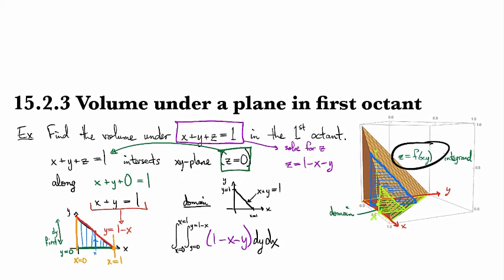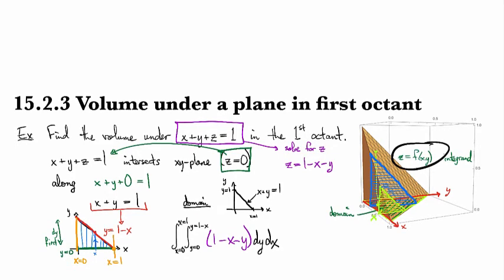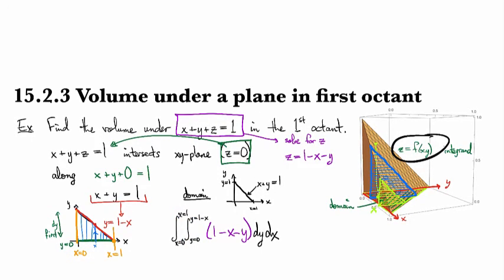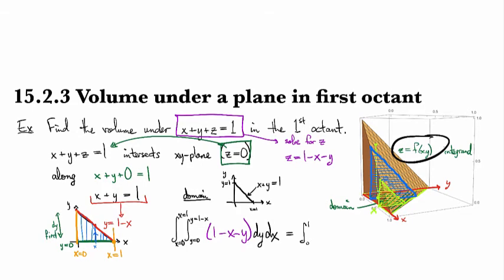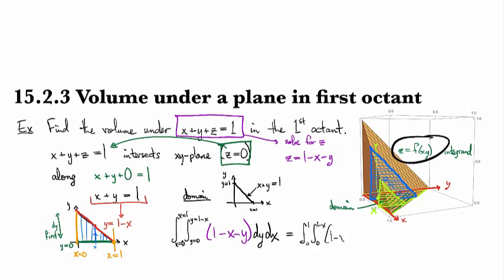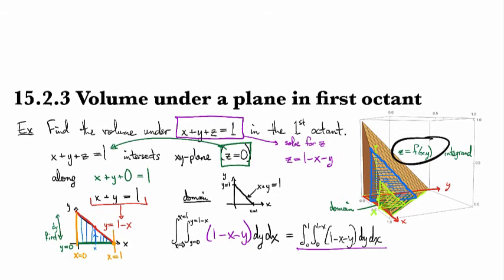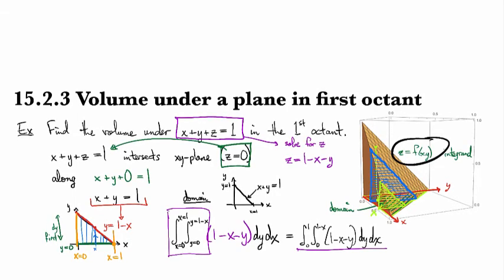So the full setup is: integral from x equals 0 to 1, integral from y equals 0 to 1 minus x, of 1 minus x minus y, dy dx. I like to write those little 'y equals' and 'x equals' labels in the bounds just to clarify what's going on. You may see it written more compactly — zero to one, zero to one minus x, one minus x minus y, dy dx — and that's fine too. It's especially helpful to use this notation now because next we'll do triple integrals with three variables to keep track of.